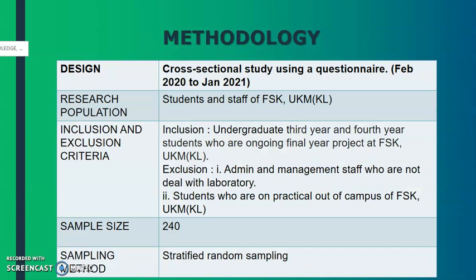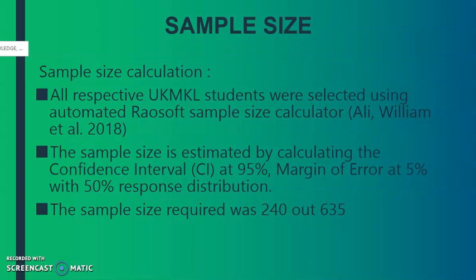For the methodology, the study design is cross-sectional using a questionnaire, from February 2020 to January 2021. Research population: students and staff of FSK UKMKL. Criteria for inclusion: undergraduate third and fourth year students, because this group is undergoing their FYP and exposed to many activities at the lab. Criteria for exclusion: admin and management staff who are not dealing with the lab, and students who are on practical placement out of campus. Sample size: 240, using stratified random sampling. Sample size was calculated using an automated sample size calculator, estimated at 95% confidence interval, 5% margin of error, with 50% response distribution, giving a sample of 240.